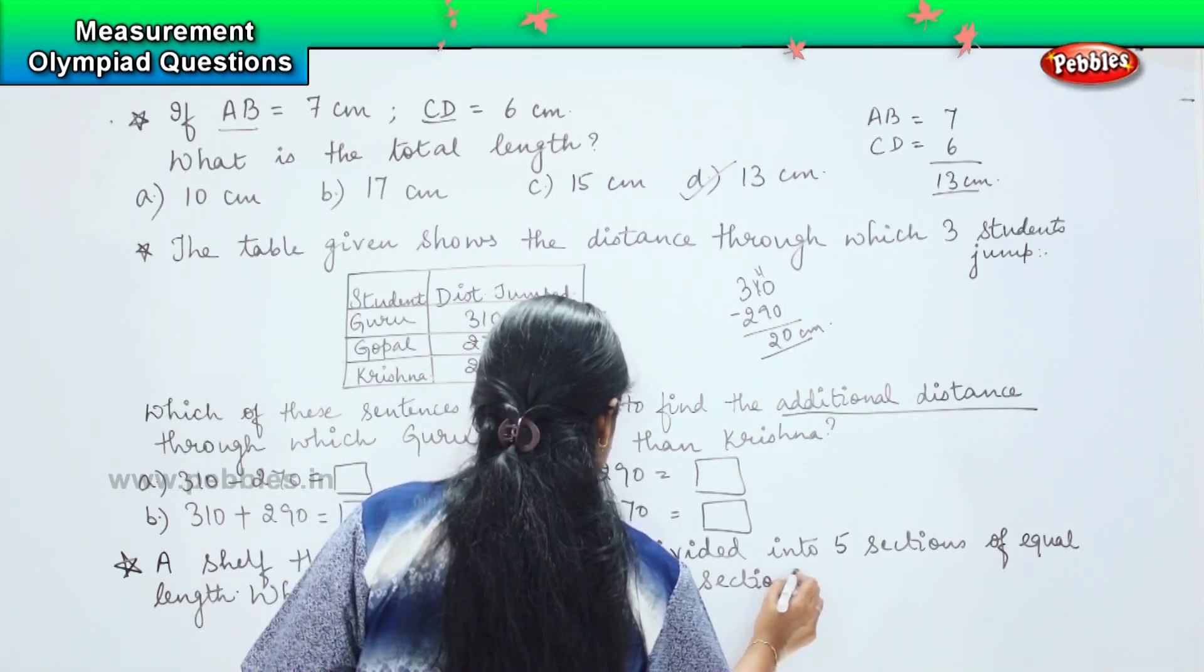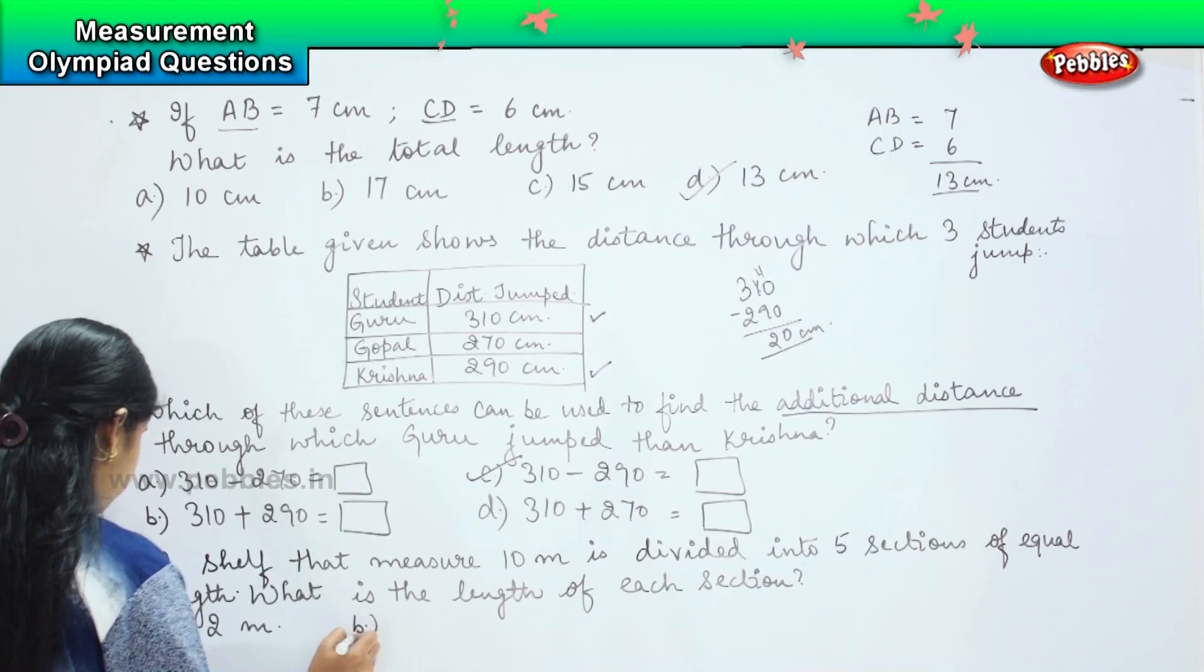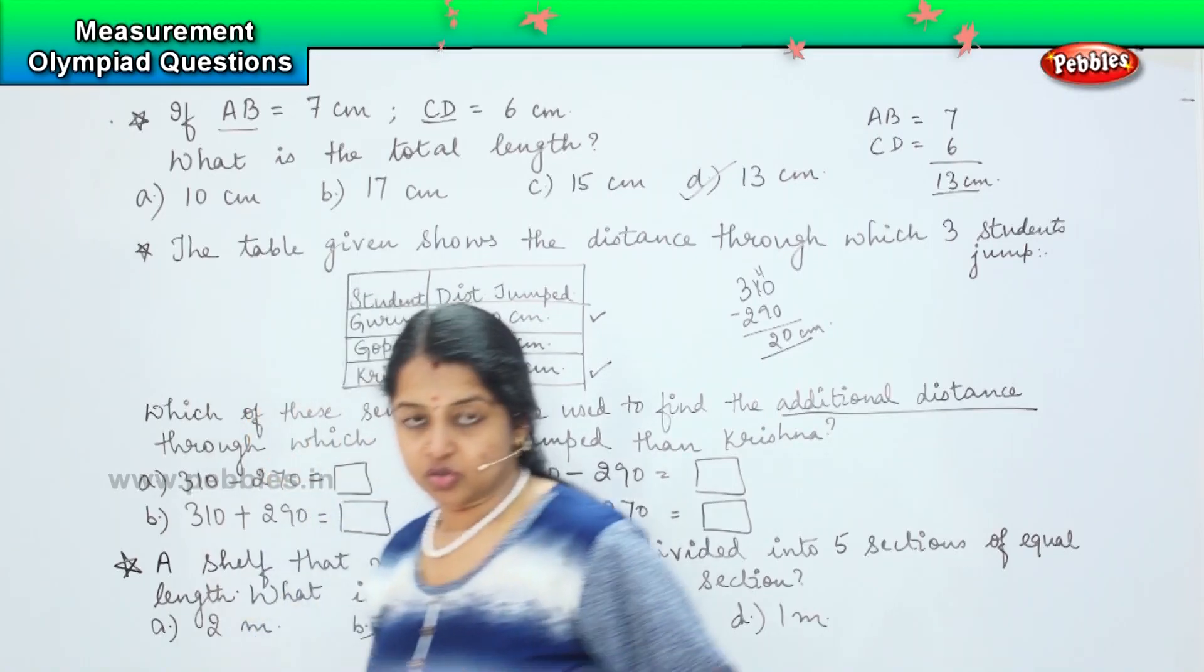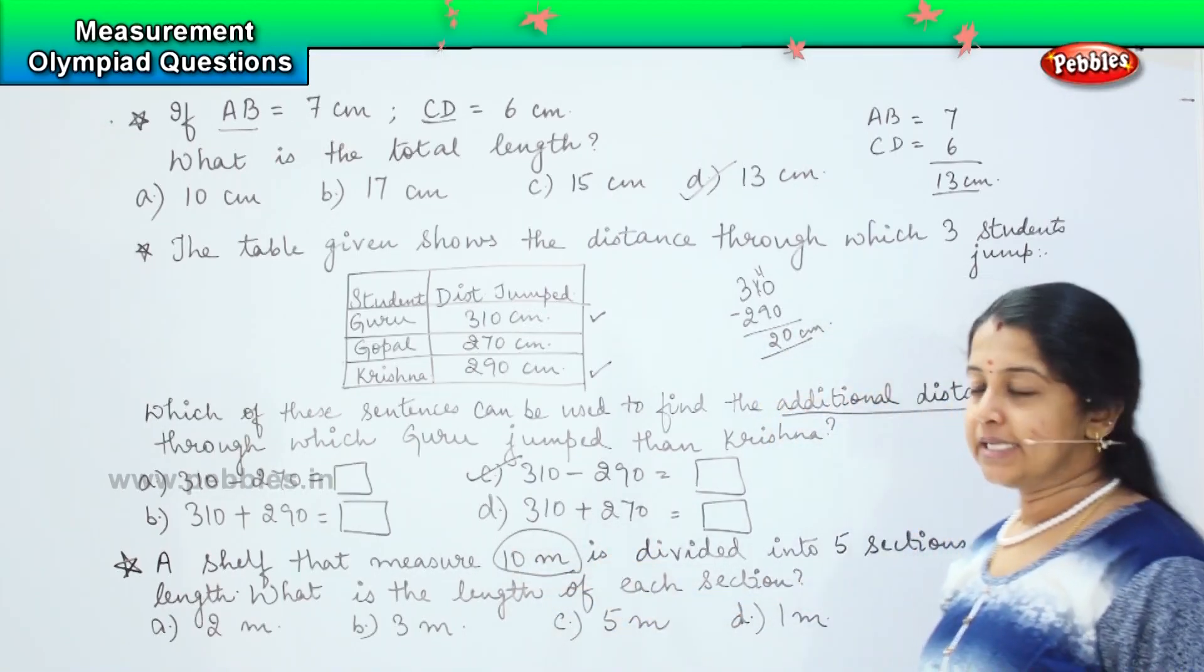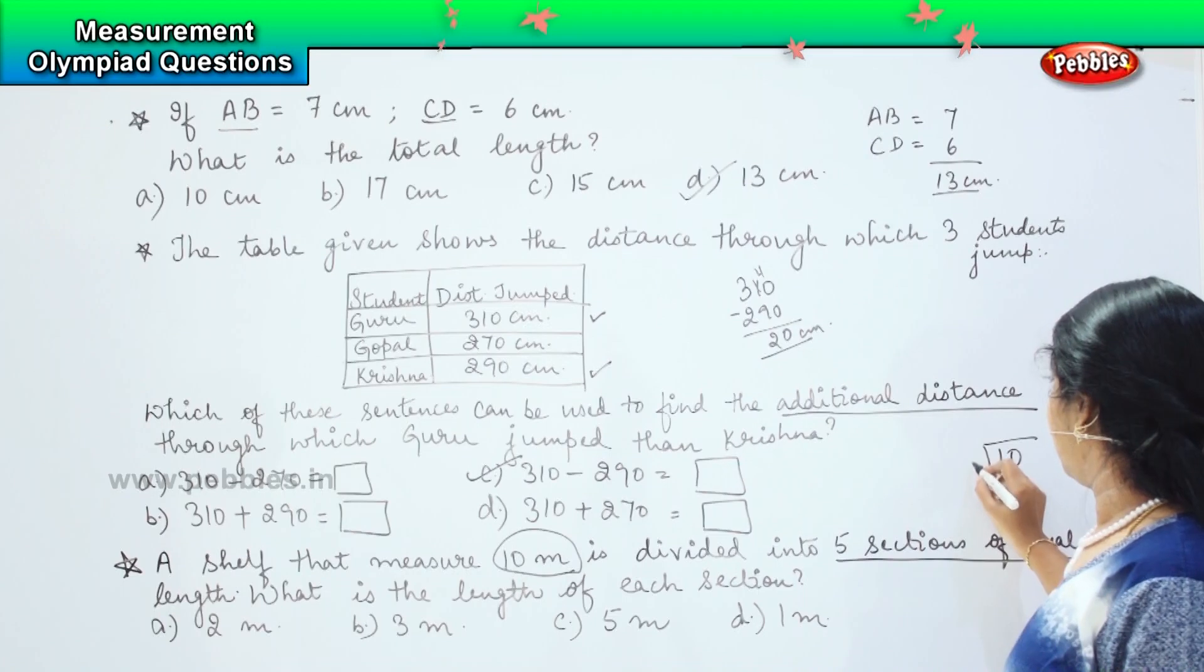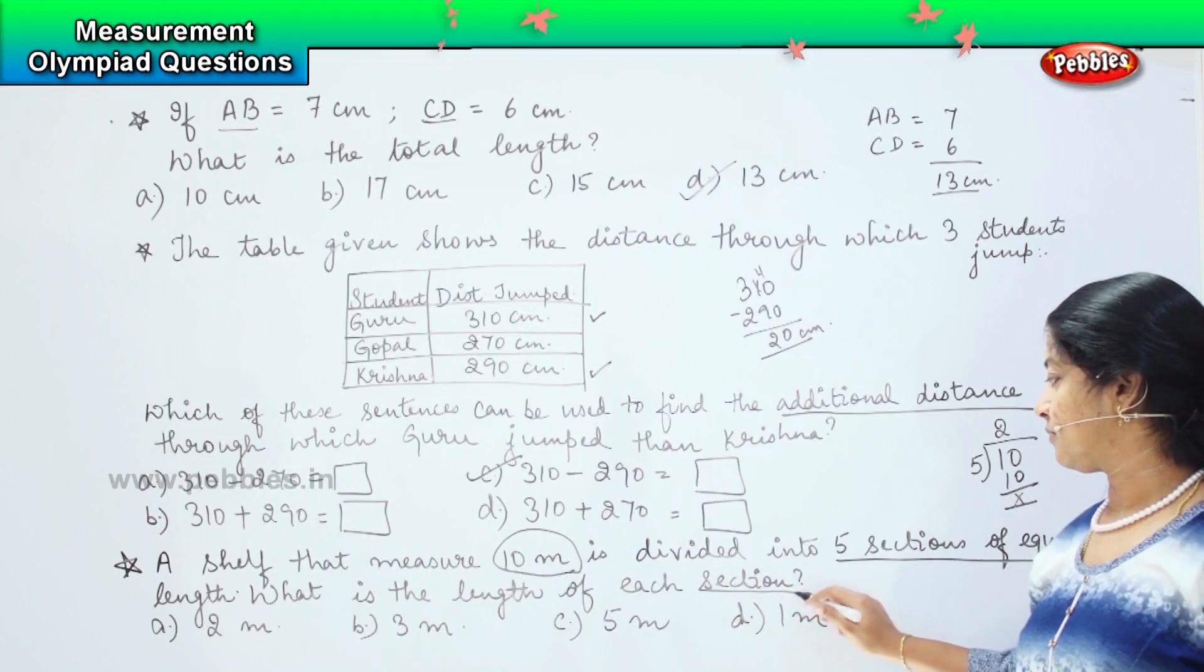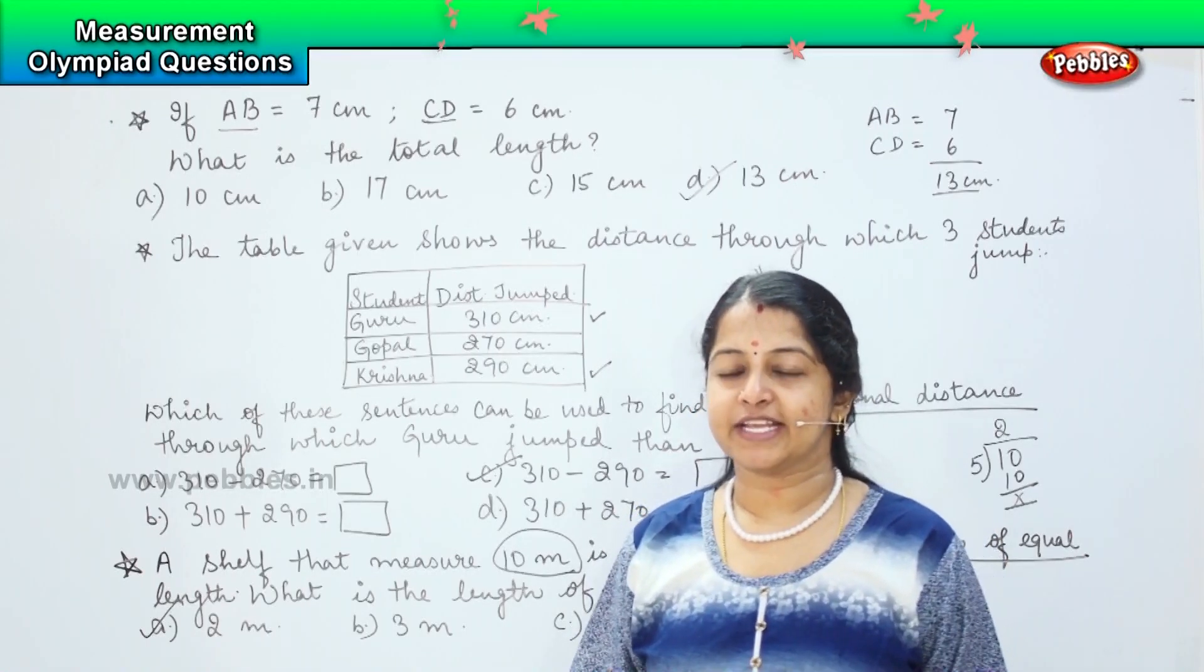The options are: a) 2 meter, b) 3 meter, c) 5 meter, and d) 1 meter. Again it is an easy question. A shelf is having a measurement of 10 meters and it is divided equally in 5 sections, so 10 divided by 5. 5 ones are 5, 5 twos are 10, so the length of each section is 2 meter. That is option A. Clear? Shall we move to the next question?